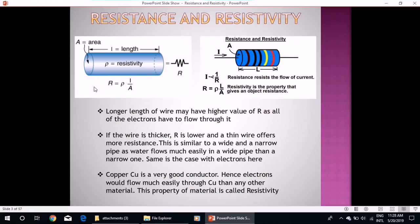Now copper is a very good conductor, hence electrons would flow much easily through copper than any other material. This property of material is called resistivity.